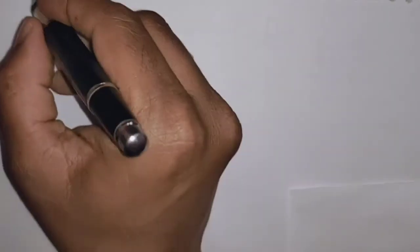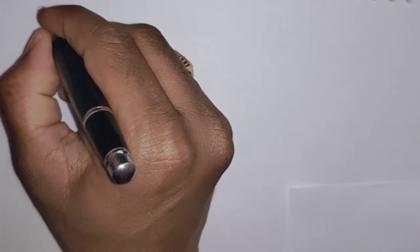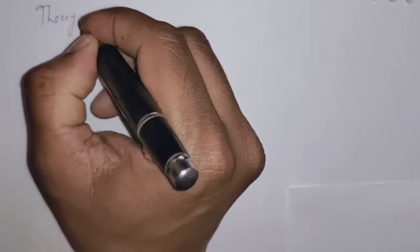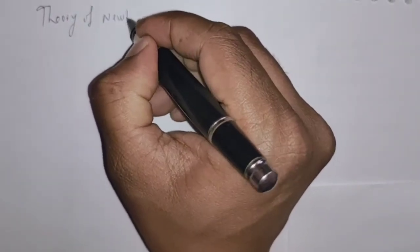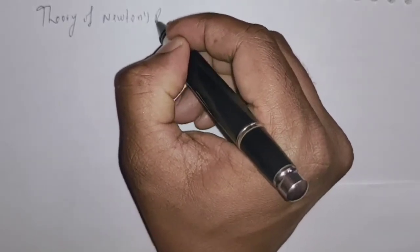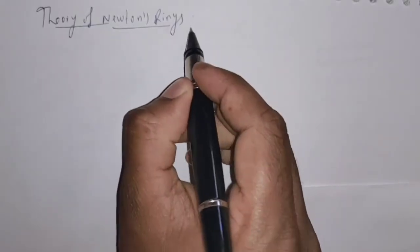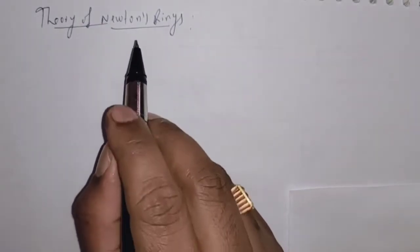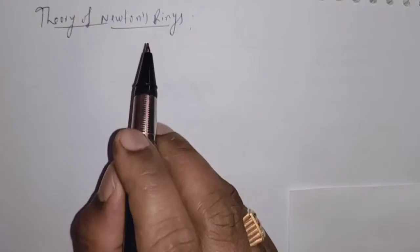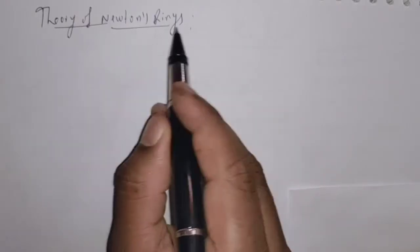In the last video, we discussed the experimental arrangement of Newton's rings. In today's video, I am going to discuss the theory of Newton's rings — that is, we are going to write the condition for bright and dark fringes in the case of Newton's rings.